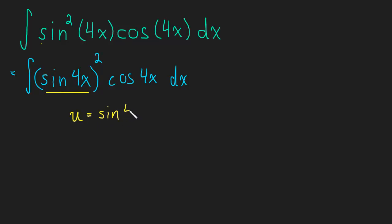So u is sine of 4x. du is, well, the derivative—this is a chain rule. Remember, we have an outside function, sine, and an inside function, the 4x. So it's going to be derivative of the outside, that's cosine, repeat the inside, 4x, times the derivative of the inside, and the derivative of 4x is simply just 4. And then we can't forget our dx.